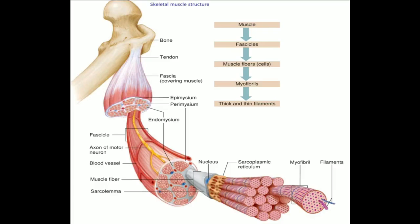One or many nuclei are present in muscle cells depending on the type of muscular tissue. Muscle fibers contract and decrease in length on stimulation; hence, muscular tissue is also known as contractile tissue. It is vascular tissue and is innervated by nerves. Muscle cells contain a large number of mitochondria because energy is required for muscular activity, and mitochondria — the powerhouse — helps in providing that energy.